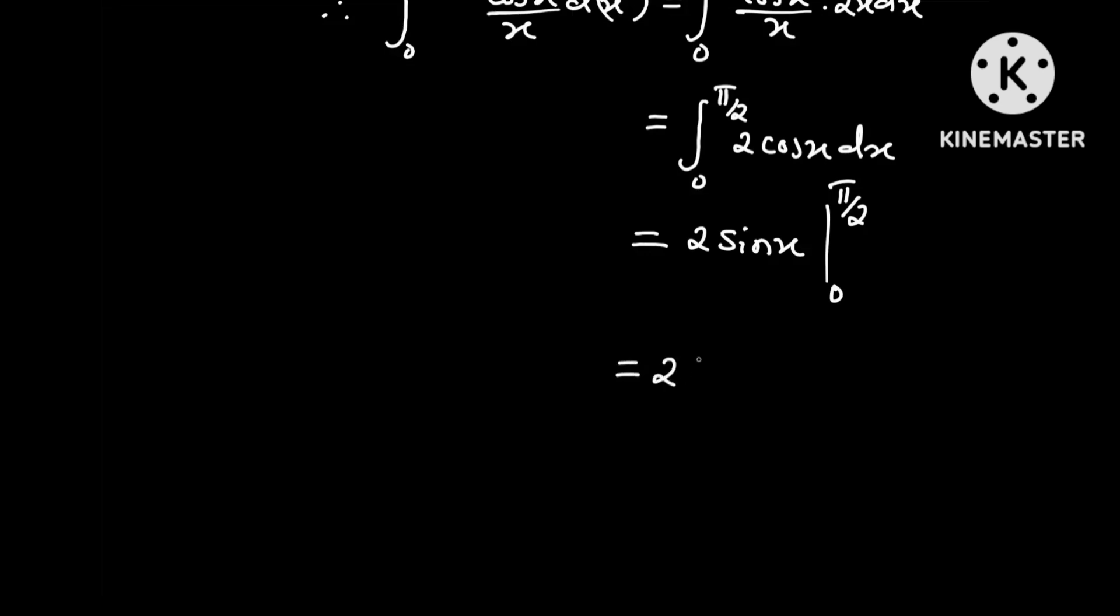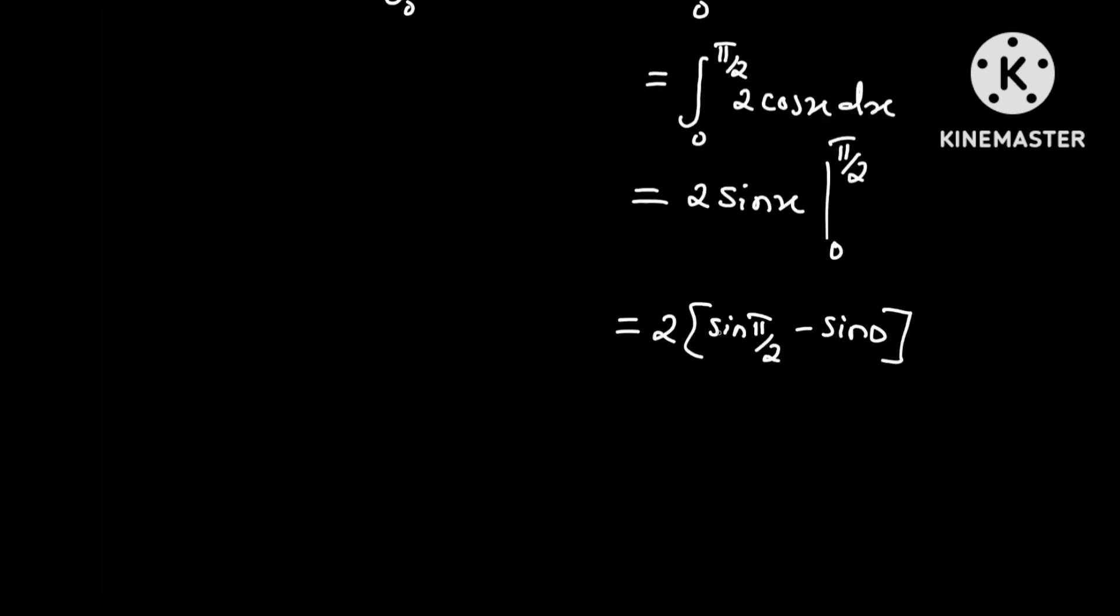And this is equal to 2 multiplied by sine pi over 2 minus sine 0. We know the sine of pi over 2 is 1 and the sine of 0 is 0.